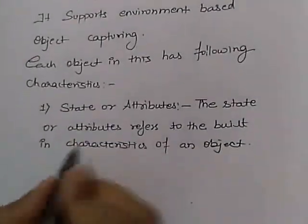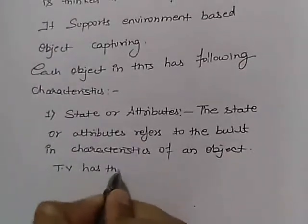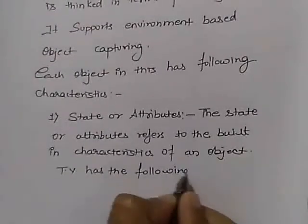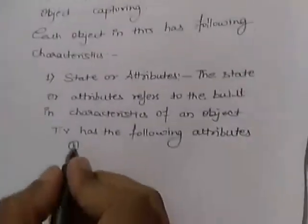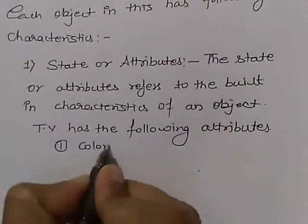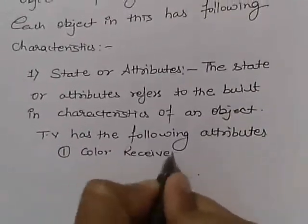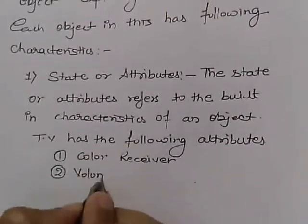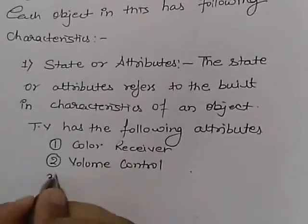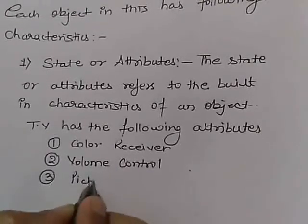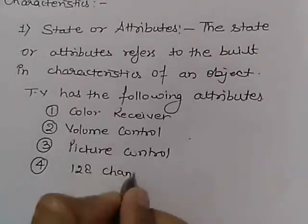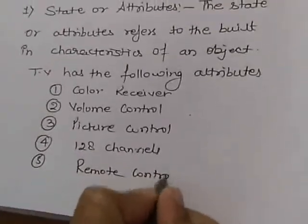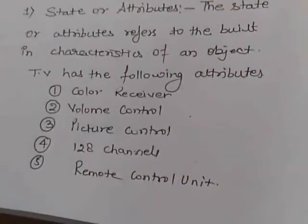For example, we can say that a TV has the following attributes: it has color receiver, volume control, picture control, 128 channels, and a remote control unit. So this depicts the state and the attributes of an object.